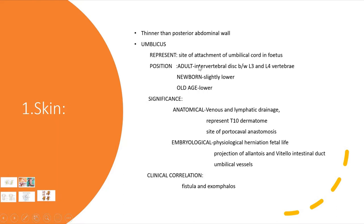Regarding the position of the umbilicus in adults, it is located at the level of the L3–L4 vertebrae. In newborns it is slightly lower because the abdominal muscles are not fully developed, and in old age it is also lower due to the diminished tone of the abdominal muscles.